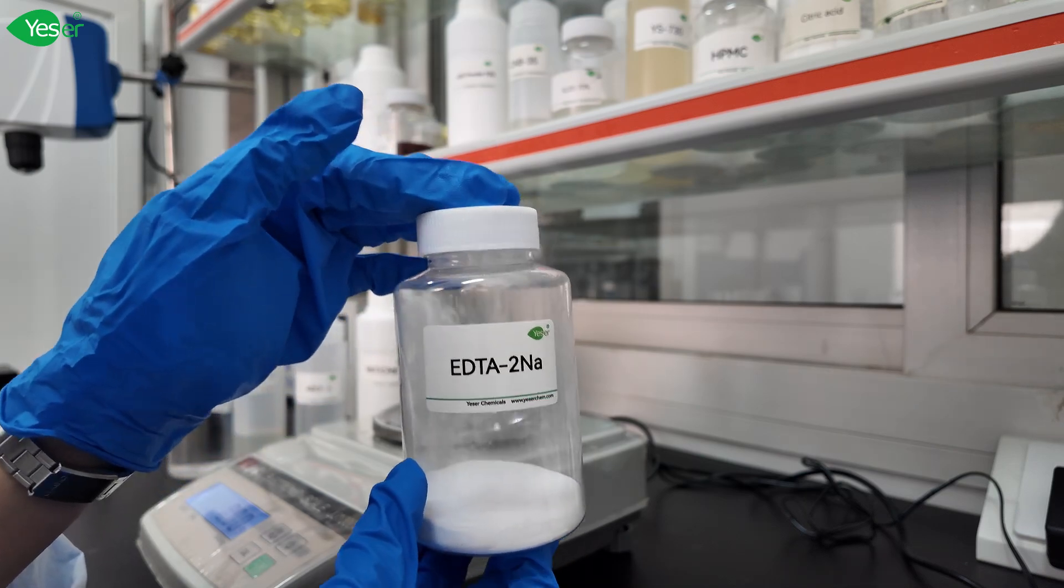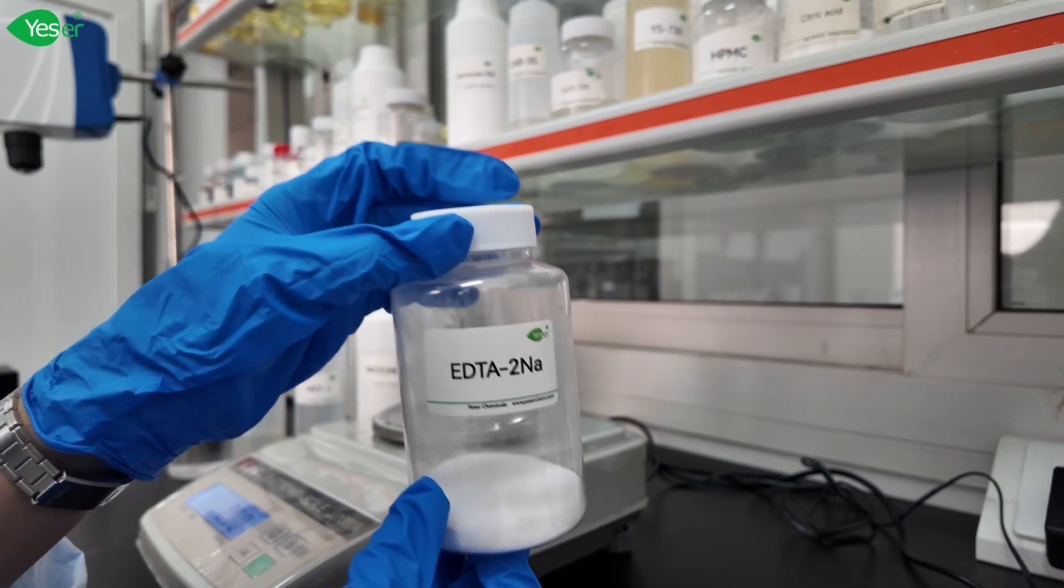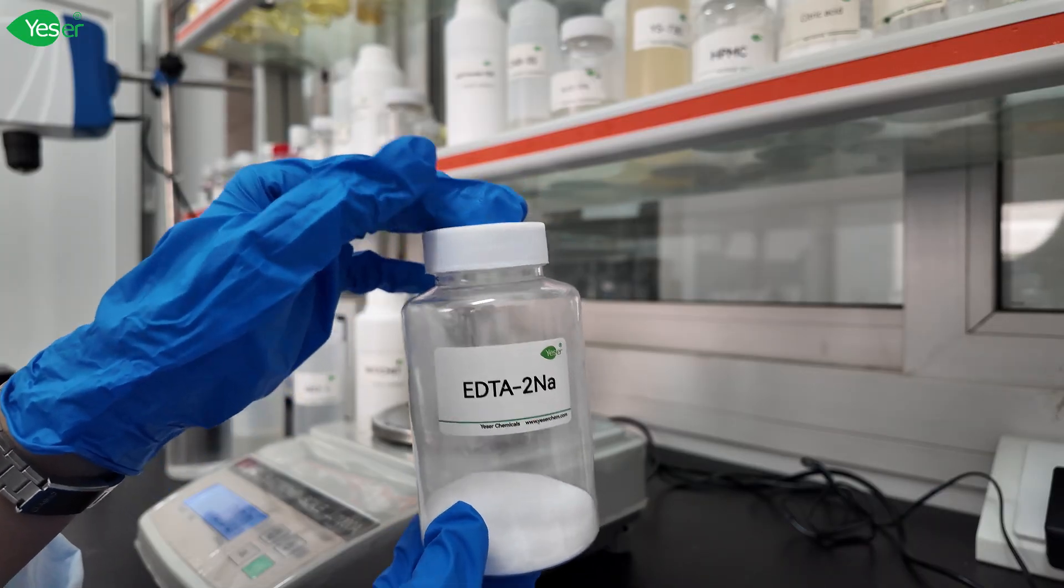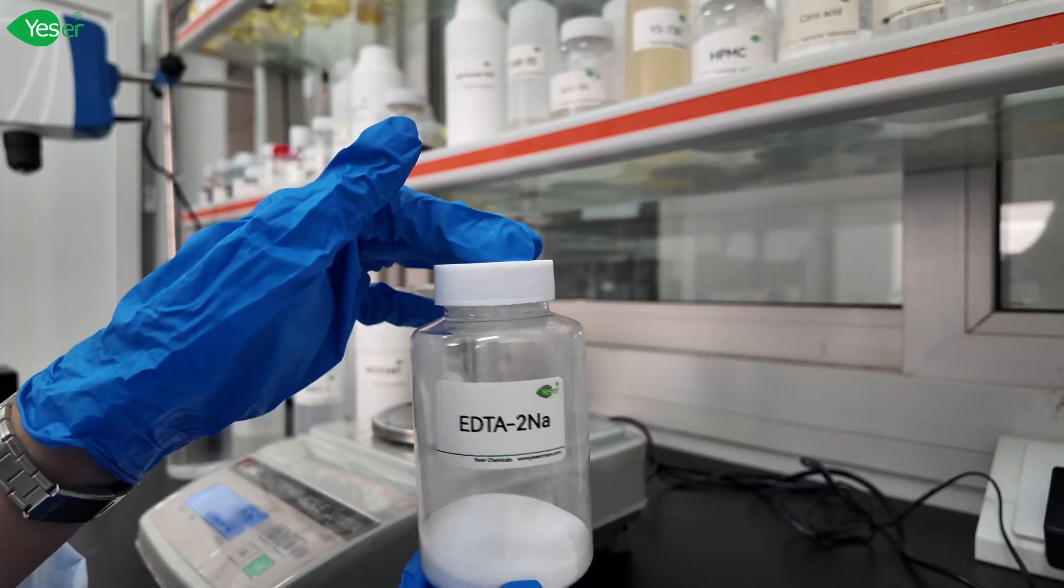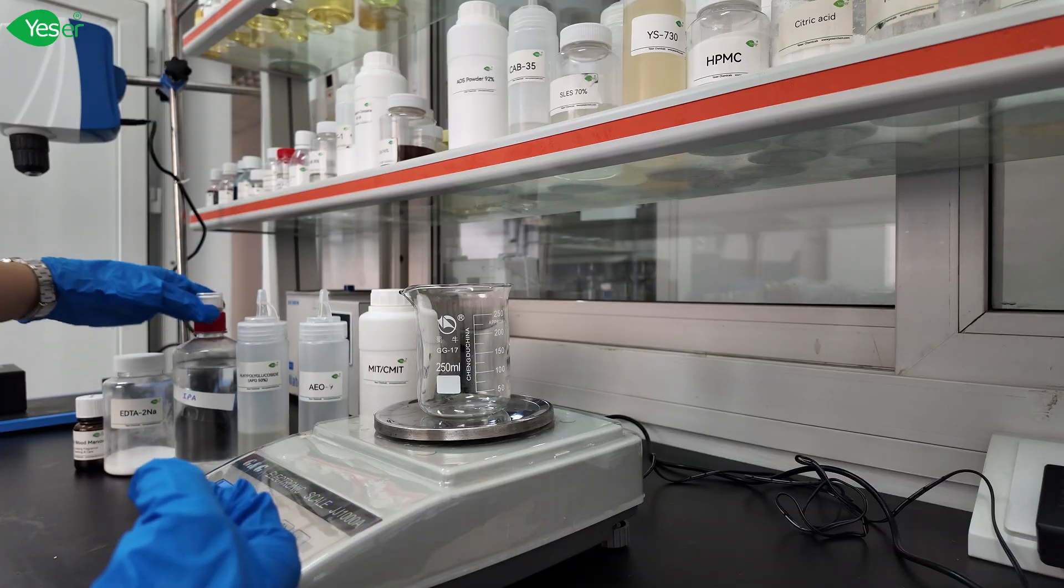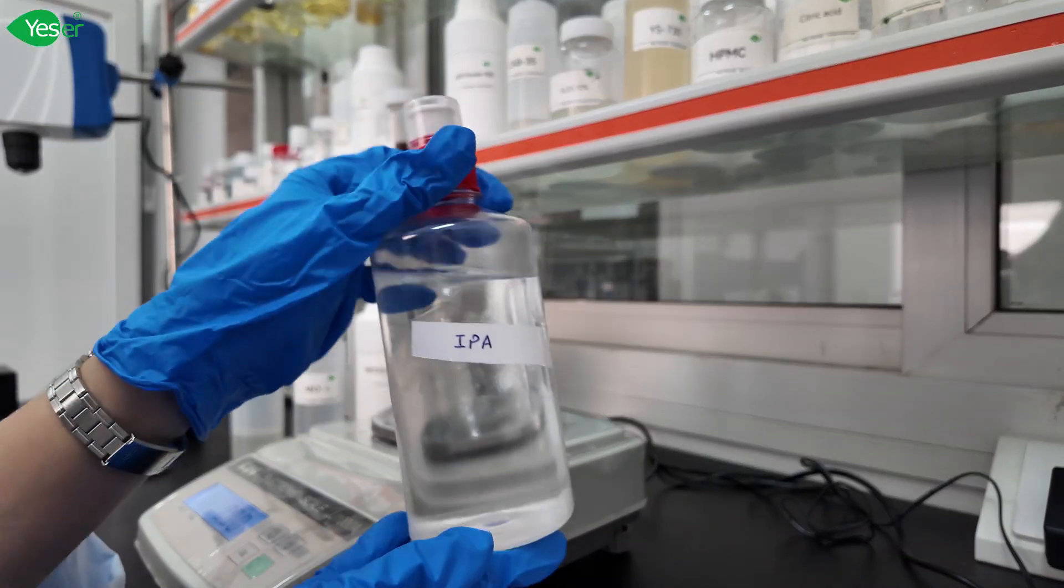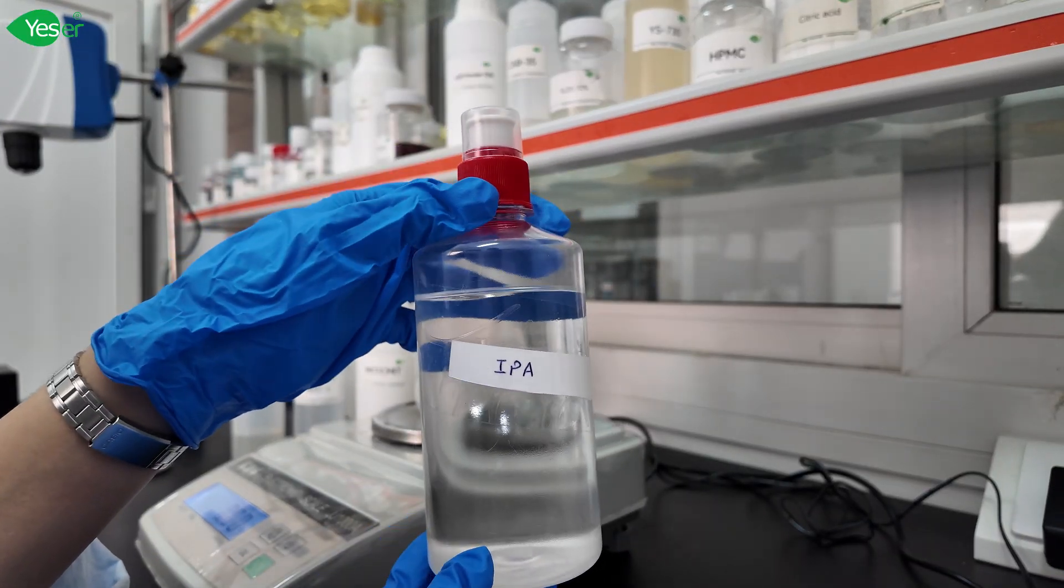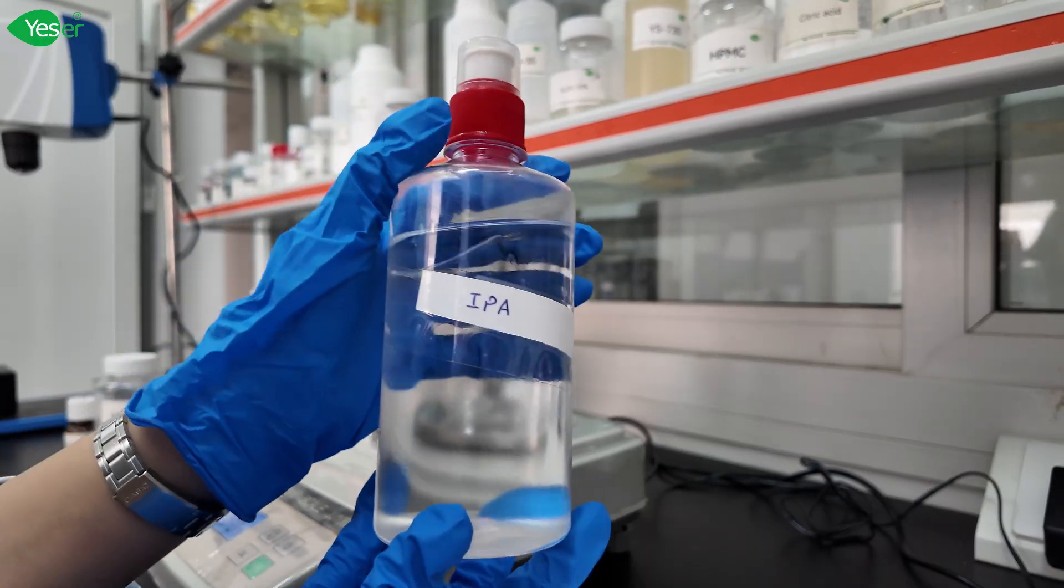It will give us a streak free property for our glass cleaning. Then after that is our IPA or isopropyl alcohol or isopropanol. So this one will give us the light disinfection and the quick drying effect in our glass cleaner.